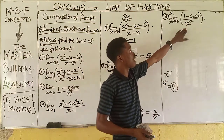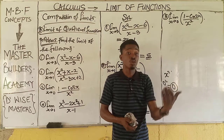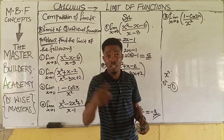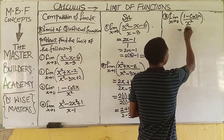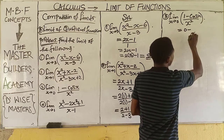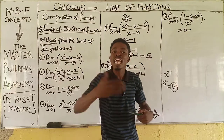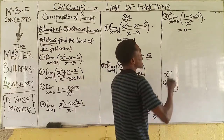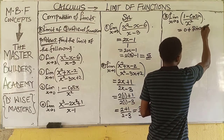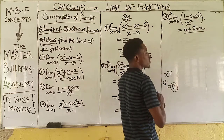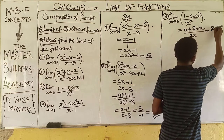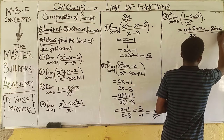Since substituting x into the denominator gives zero, we use L'Hôpital's rule and differentiate the functions. Differentiating the numerator: the constant 1 gives 0, and differentiating −cos x gives +sin x. Differentiating the denominator: x² gives 2x. This gives us sin x over 2x.